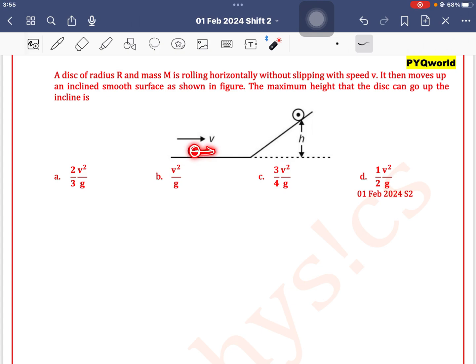We have a disk moving with velocity V. When an object is moving with velocity V, it has kinetic energy. When it reaches a height, it will have potential energy. So kinetic energy gets converted into potential energy, and we can write: kinetic energy equals potential energy.